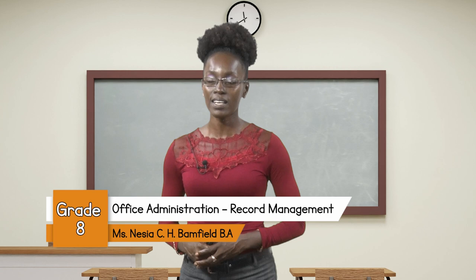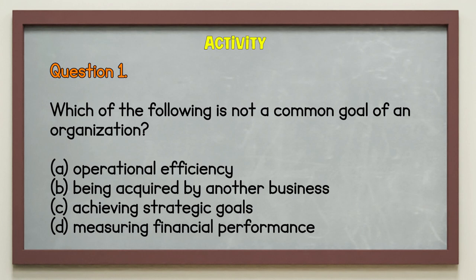We have come to the end of today's lesson on decentralized and centralized filing or management systems. You are expected to complete each of the following questions in your notebook. Question number one: which of the following is not a common goal of an organization? A. Operational efficiency. B. Being acquired by another business. C. Achieving strategic goals. D. Measuring financial performance.